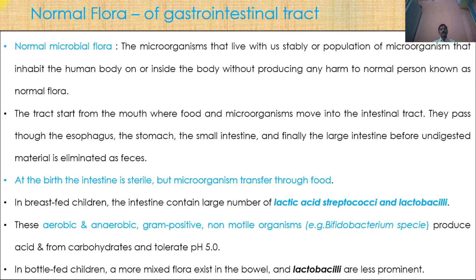Microorganisms are transferred through food during the feeding process. In breastfed children, the intestine contains a large number of lactic acid bacteria, streptococci, and lactobacilli. These consist of aerobic and anaerobic, very few gram-positive non-motile organisms. One example is Bifidobacterium species, which produce acid from carbohydrates and tolerate pH 5. In bottle-fed children, a more mixed flora exists in the bowel and lactobacilli are less prominent.